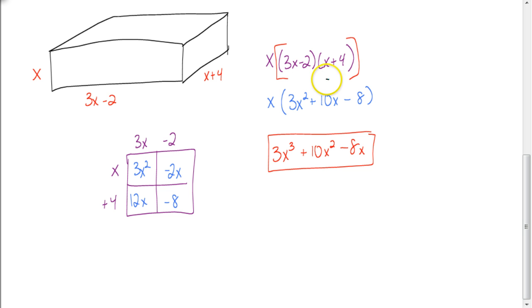That's why I like to do this method better. Multiplying the binomials first and then distributing the x through. It avoids making that common mistake. But, when you do that, you get 3x squared plus 10x minus 8. Again, you could also use the box method that I show down here. And, then distribute the x through and you get your answer. 3x cubed plus 10x squared minus 8x.